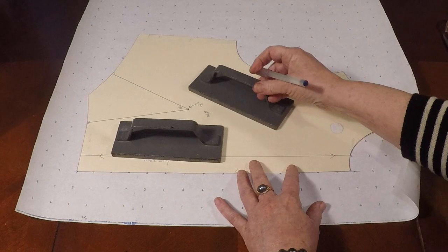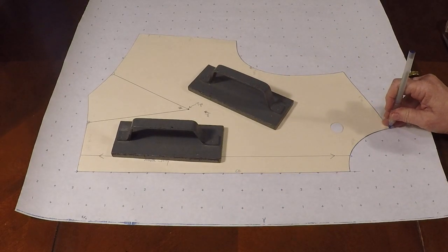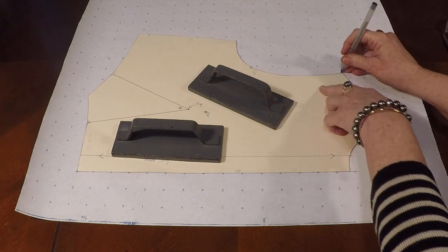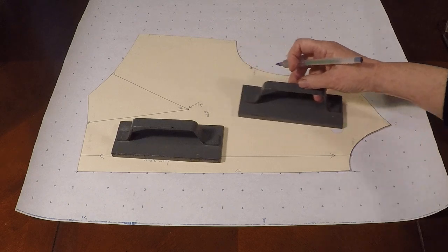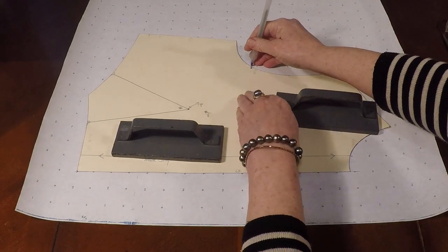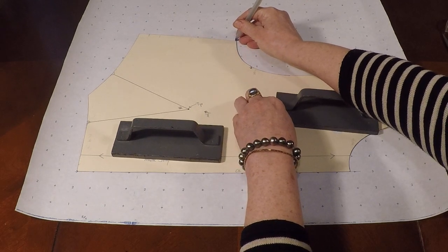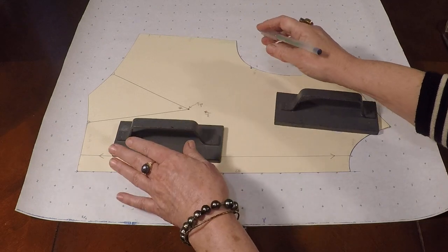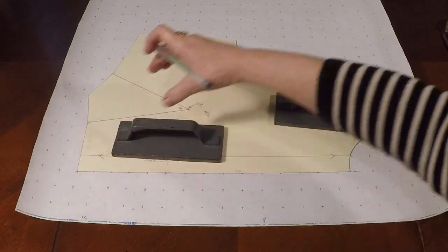Right up until that first dart leg. Now I'm going to come up here to the top and I'm going to copy my neckline, my shoulder, my armhole with the armhole notch, right here, armhole notch, the rest of my armhole. And now I'm getting on to my side seam.